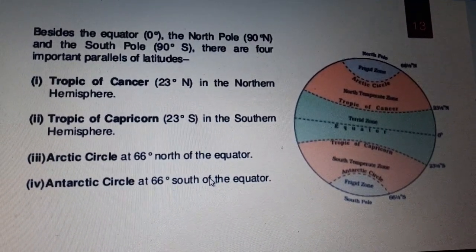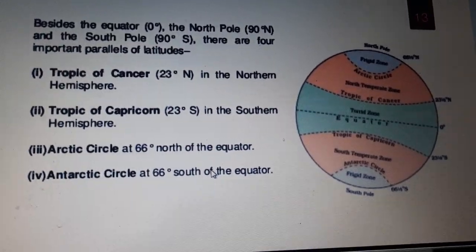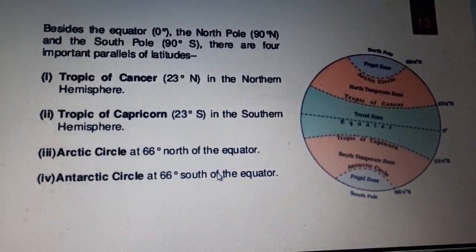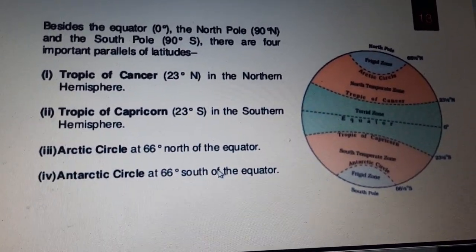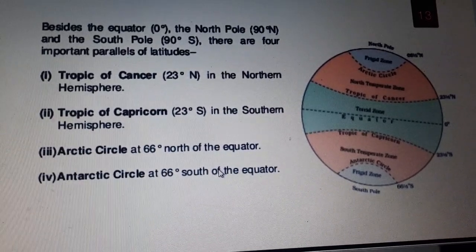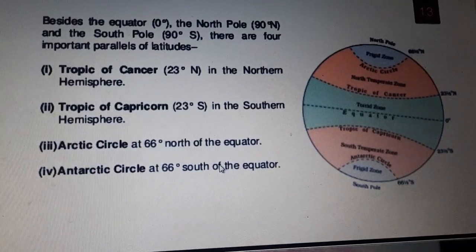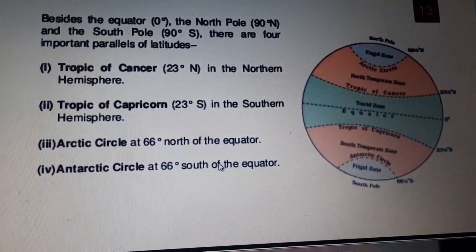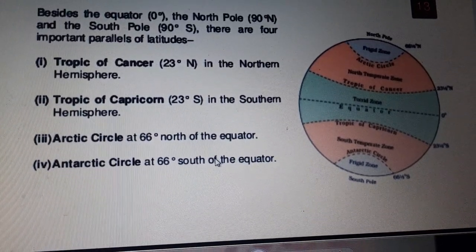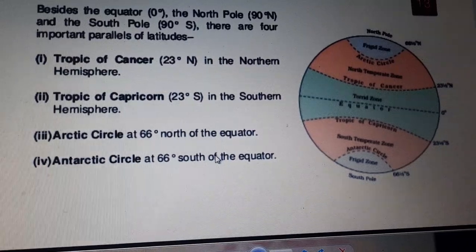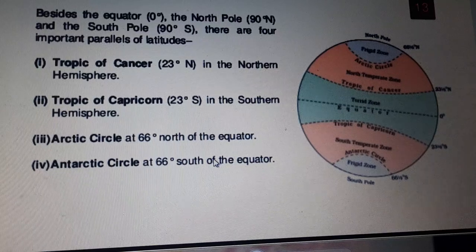Besides the equator at zero degrees, the north pole at 90° N, and the south pole at 90° S, there are four important parallels of latitude — which we learned last year in Form 5: the Tropic of Cancer at 23.5° N in the northern hemisphere, the Tropic of Capricorn at 23.5° S in the southern hemisphere, the Arctic Circle at 66.5° N, and the Antarctic Circle at 66.5° S of the equator.